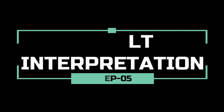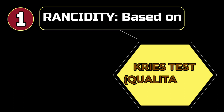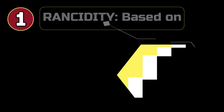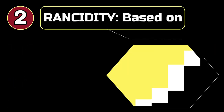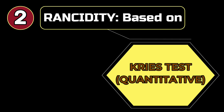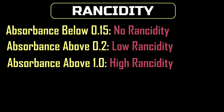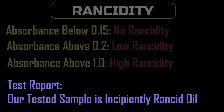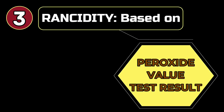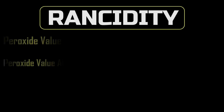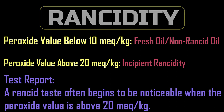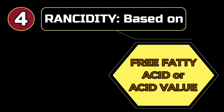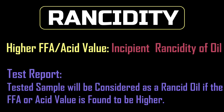Let's interpret the results. In the qualitative Kreiss test, the pink color formed indicates incipient rancidity. In the quantitative Kreiss test, we got an absorbance of 0.338, which is higher than 0.2, so we can say the tested oil sample is a rancid oil. Fresh oils usually have peroxide values well below 10 mEq per kg, and rancidity begins to be noticeable when the peroxide value is above 20 mEq per kg. High free fatty acid and acid values higher than reference values also indicate the rancidity of an oil sample.